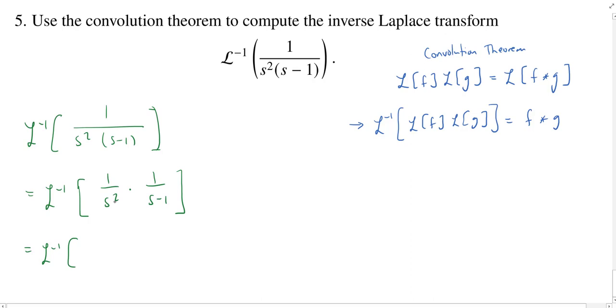So for example, 1 over s squared is the Laplace transform of t. And 1 over s minus 1 is the Laplace transform of e to the t.